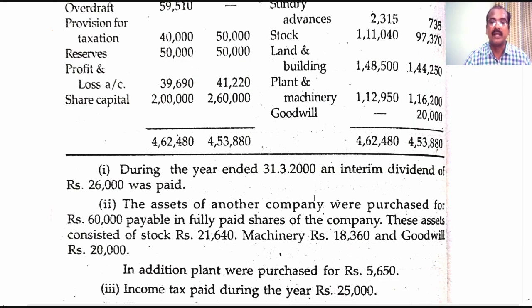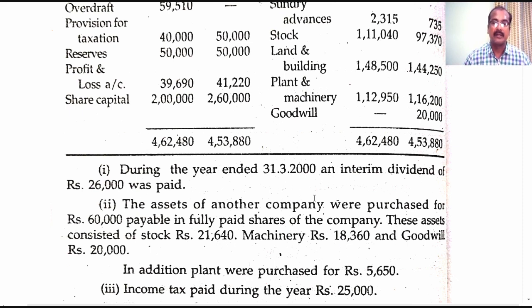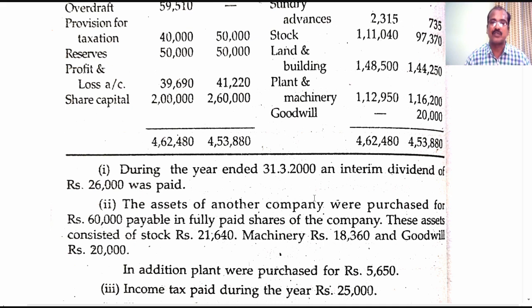During the year ending 31-3-2000, an interim dividend of 26,000 rupees was paid. So it has to be proposed first in the adjusted P&L account. We will debit it in the adjusted P&L account as interim dividend proposed, followed by this it would be taken over to the application side of the funds flow statement because it is a fund outflow.